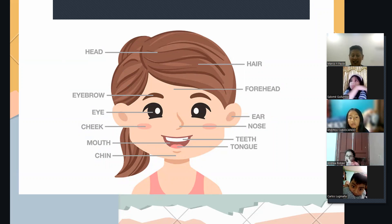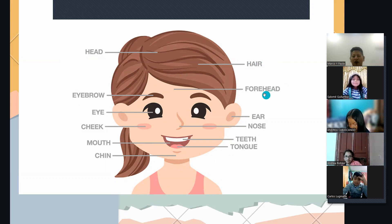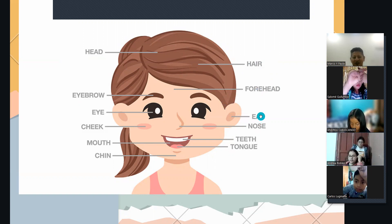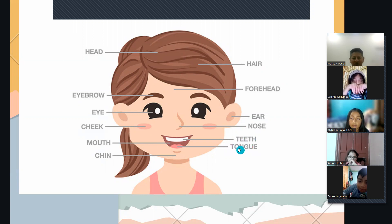Ahora, ¿quién me puede decir? Yo le digo en inglés y me dice en español. Muy bien, Sarai. Hair — cabello. Muy bien. Forehead — frente. Muy bien. Ear — oreja. Muy bien. Nariz. Muy bien. Teeth — dientes. Tongue — lengua.